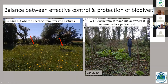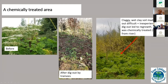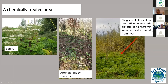Here we're digging out giant hogweed dispersing from the rivers into the pastures. The dead stems were also dug out back in January 2020. An example of a chemically treated area outside the river corridor: rural social scheme workers came in to train and dig out. The combination of claggy wet soil, extremely difficult root removal, and inexperience led to regrowth, so we eventually treated this area with herbicide. That was really how we defined when to use herbicide and when not to — but we didn't use it at all in the river corridor except for one Japanese knotweed infestation.